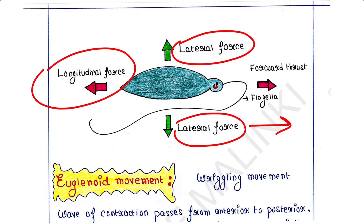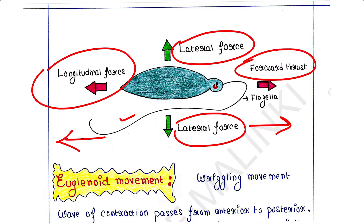The longitudinal force appears due to the movement of the flagella. This force pushes the water backward because the flagella is moving in the backward direction. When it pushes water in the backward direction, this produces a forward thrust in the opposite direction.